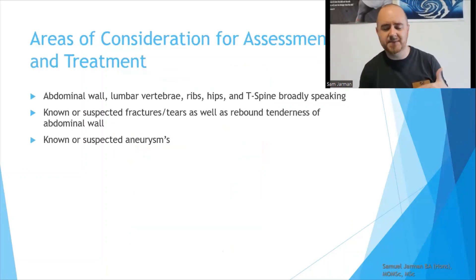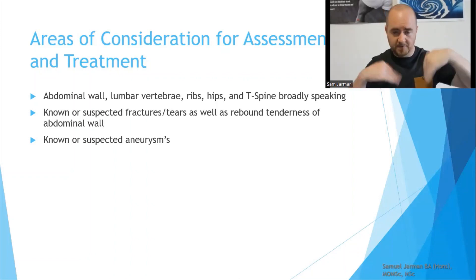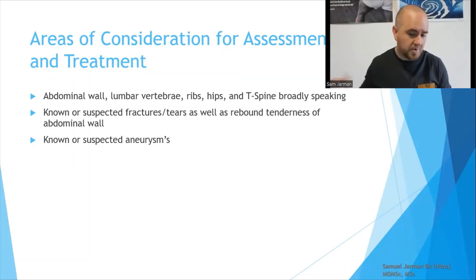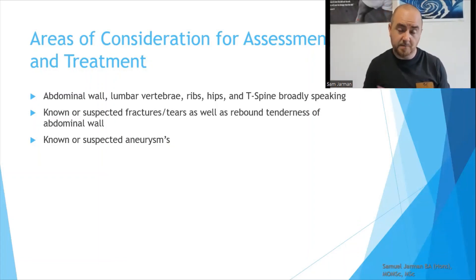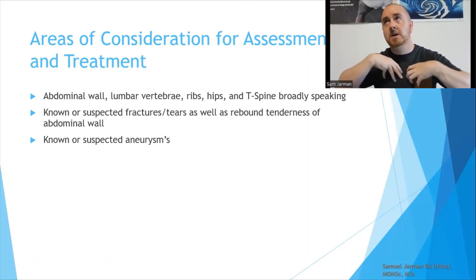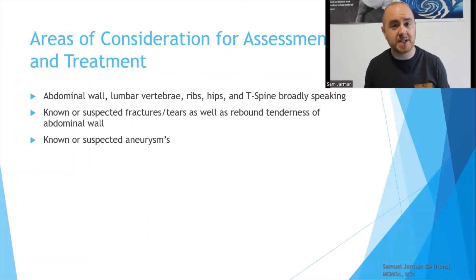The areas of consideration for assessment and treatment of what we're terming pelvic flexion — which breaks the consistent conversation within manual therapy and osteopathy — include the abdominal wall, the lumbar vertebrae, the ribs, the T-spine broadly speaking, because of possible interaction with intercostal nerves and intercostal vasculature, and the hips. You can shortcut this by doing a full assessment, identifying wherever there is motion dysfunction, treating that, and if there are mechanical correlates to the problem being presented, you've likely done the best that you can.